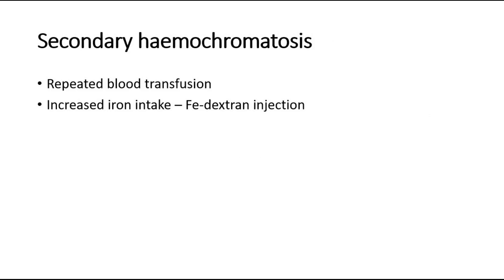Whereas for secondary haemochromatosis, it is due to repeated blood transfusions or increased iron intake. Repeated blood transfusions can be commonly seen in those who have thalassemia major, aplastic anemia, sickle cell disease, myelodysplastic syndrome, leukemia, or lymphoma — so they are exposed to the risk of secondary haemochromatosis. Increased iron intake can be due to iron dextran injections.